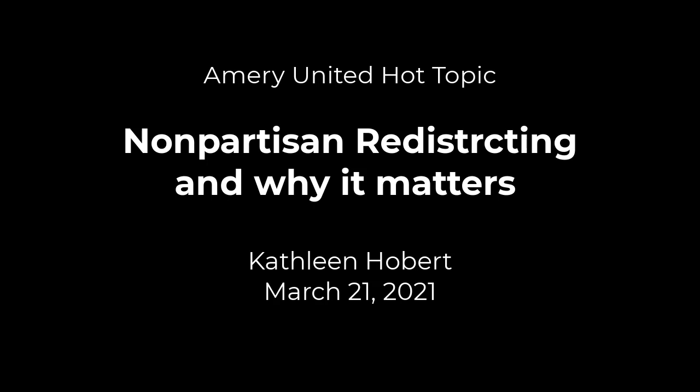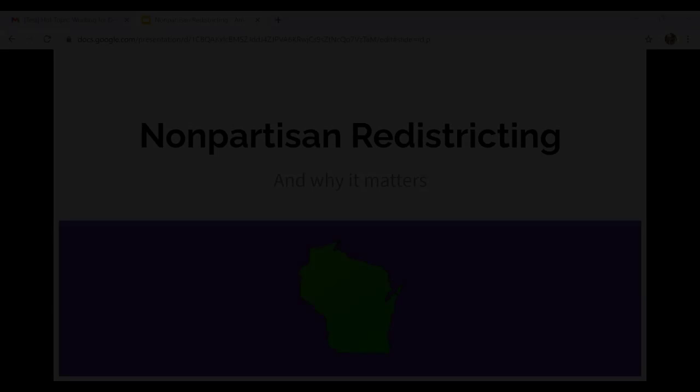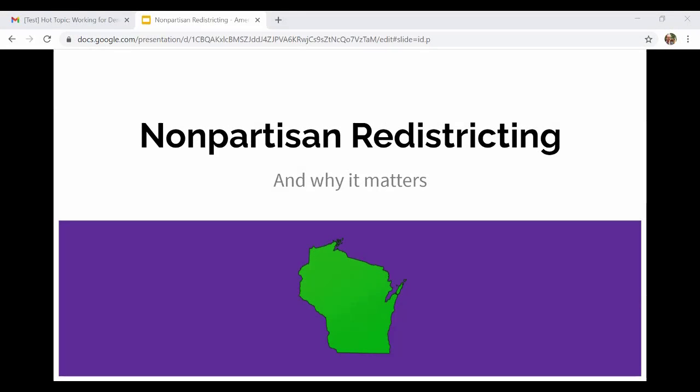It sounds complicated until you learn the few steps to it, and then it clicks. For me it clicked — I was like, okay, this makes sense. And once it made sense to me, it became one of my top political issues, because until gerrymandering ends and we get money out of politics, none of the things I feel really passionately about are going to shift in government. That's one of the reasons I decided to get more involved. We're going to talk about non-partisan redistricting and why it matters.